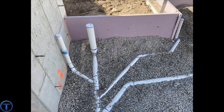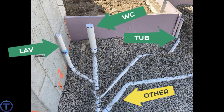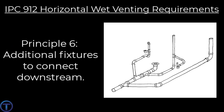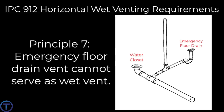We're going to pipe around the bathroom group so that it does not interfere with our horizontal wet vent. Horizontal wet vent principle six: any additional fixtures are to connect downstream from the wet vented bathroom group.